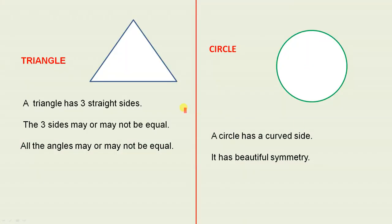The triangle. A triangle has 3 straight sides. The 3 sides may or may not be equal. All the angles may or may not be equal.